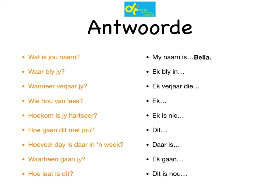'Waar bly jy?' — The 'jy' changes to 'ek.' 'Where do you live?' — 'I live in' — 'Ek bly in.' Please note that we take the 'bly' with us from the question: 'Ek bly in 'n groot huis.' 'Wanneer verjaar jy?' — 'Ek verjaar die...' — we change 'jy' to 'ek' and keep 'verjaar.' 'Wie hou van lees?' — 'Who likes reading?' — Answer with 'ek': 'Ek hou van lees.'